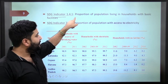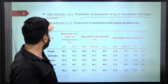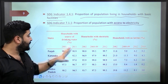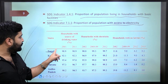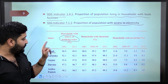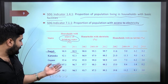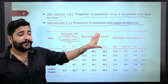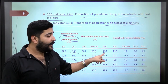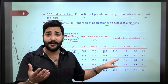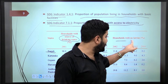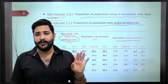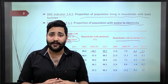On SDG indicators — the proportion of population living in households with basic facilities and access to electricity: Punjab's proportion is quite high. In terms of source of drinking water, Punjab performs better than Karnataka, Gujarat etc. Regarding households with electricity, 99.7% had electricity in 2012 and the latest number is about 100%. Households with no latrines — Punjab's figure is among the lowest at 6.2%. Very good numbers for our state.